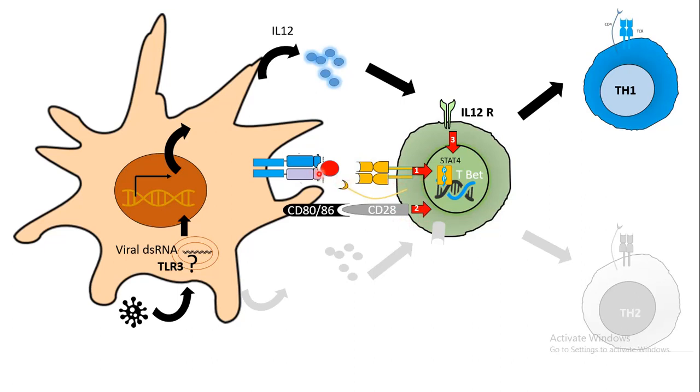For this naive T-cell to get activated, it requires at least two signals and a third modulatory signal. The first signal comes from the viral proteins displayed on the surface by class 2 MHC that is recognized by T-cell receptor. Second, CD28 on the naive T-cell and CD80 or CD86 on the dendritic cell have an interaction that gives rise to a second signal.